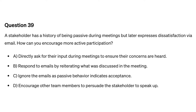Question thirty-nine. A stakeholder has a history of being passive during meetings, but later expresses dissatisfaction via email. How can you encourage more active participation? A. Directly ask for their input during meetings to ensure their concerns are heard. B. Respond to emails by reiterating what was discussed in the meeting. C. Ignore the emails as passive behavior indicates acceptance. D. Encourage other team members to persuade the stakeholder to speak up.